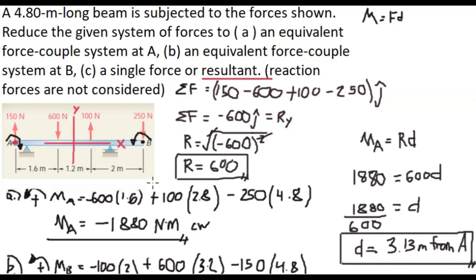That is our final answer for letter C. The resultant R equals 600 N and is located 3.13 meters from point A along the beam.